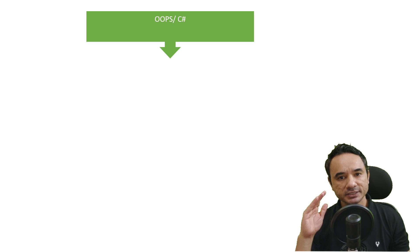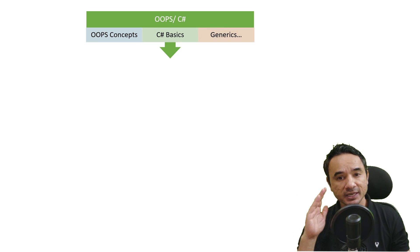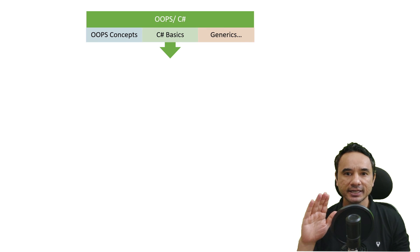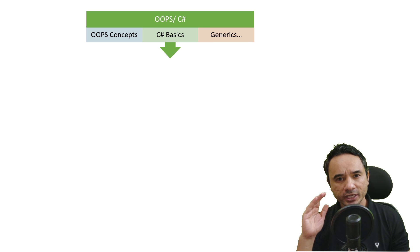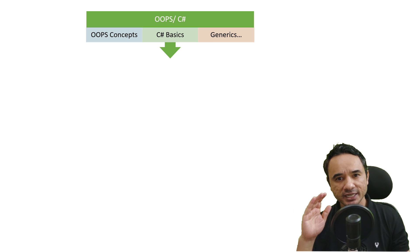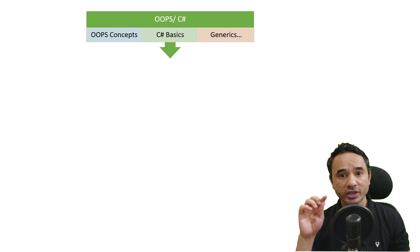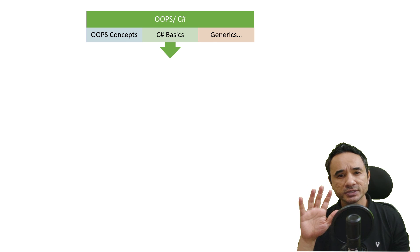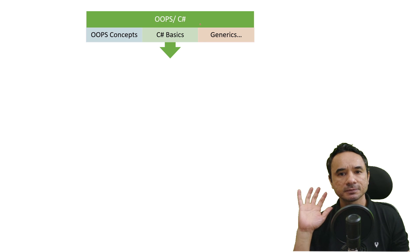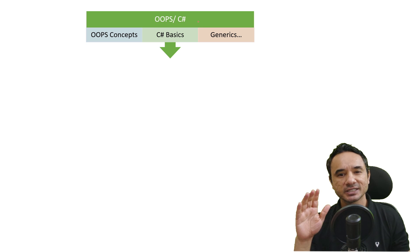First and foremost, the top skill is OOP and C#. No compromise here — OOP concepts, C# basics, generics, collections, exception handling, and keywords like abstract, interface, static, and override. You should know each and every one of them, and specifically when to use them in your applications. This is the most important topic because interviewers always start with OOP and C# questions. If you can't answer them, first impression is last impression.